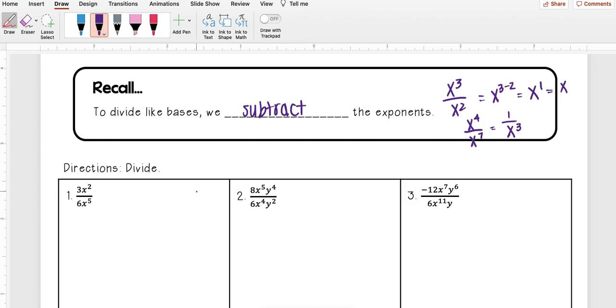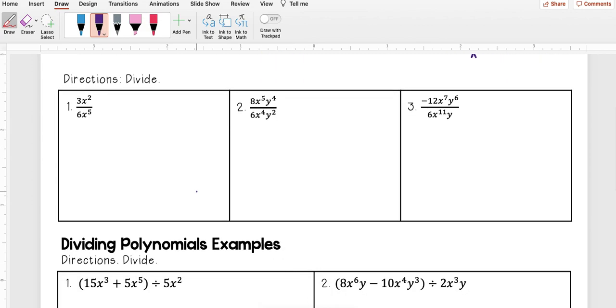So looking at this first one, I have 3x squared over 6x to the fifth. I want to first reduce my fraction out in front. I kind of think of this as being 3 over 6. Well to reduce that, I'm just going to divide both sides or top and bottom by 3. And so I get 1 half.